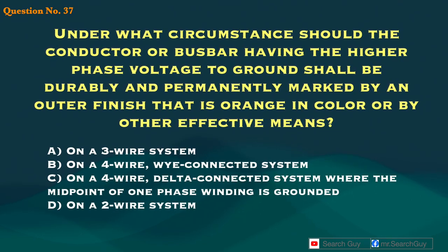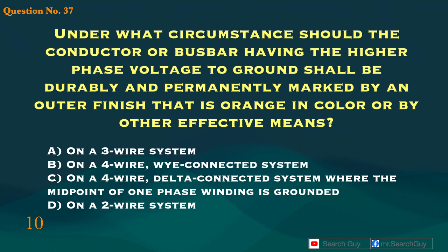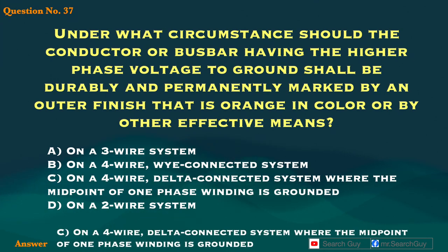Question 37. Under what circumstance should the conductor or bus bar having the higher phase voltage to ground be durably and permanently marked by an outer finish that is orange in color or by other effective means? A. On a 3-wire system. B. On a 4-wire Y-connected system. C. On a 4-wire delta-connected system where the midpoint of one phase winding is grounded. D. On a 2-wire system. Answer: C. On a 4-wire delta-connected system where the midpoint of one phase winding is grounded.